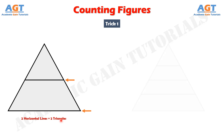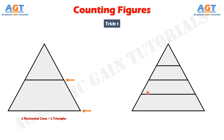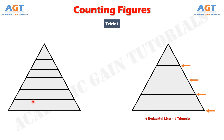Let's see another figure to make it more clear. How many triangles are there in this figure? Let's start counting the number of horizontal lines in this triangle first. Here we have 4 horizontal lines, thus the number of triangles in this figure will also be 4. Let's see one more figure — here we have 6 horizontal lines, thus the number of triangles in this figure will also be 6.